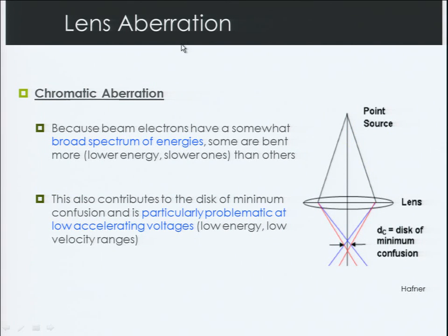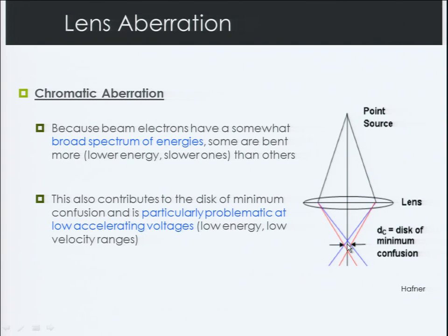Chromatic aberration occurs because all the electrons have a broad spectrum of energies — they're not all traveling at the exact same velocity, so some will be bent more or less than others. This also contributes to the disk of minimum confusion and is particularly problematic at low accelerating voltages. The term 'chromatic' is used because if they were photons traveling at different speeds with different energies, their wavelengths would be in the nanometer range and we'd see different colors in different regions, much like a prism — making use of the fact that particles of different energies bend at different angles.